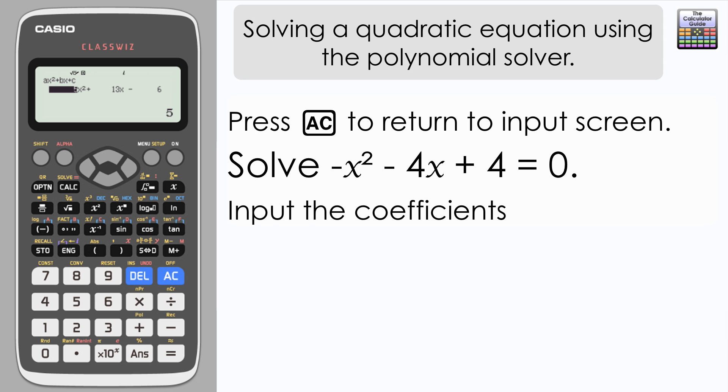Input negative 1 as your x squared coefficient, negative 4 as my x coefficient, and then plus 4, so just normal 4, as my number part. Press equals.